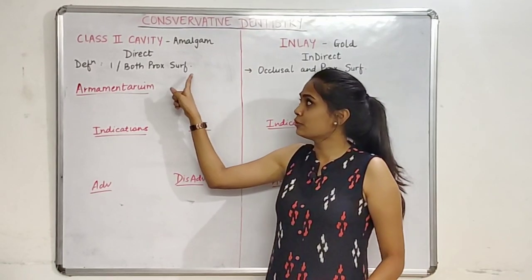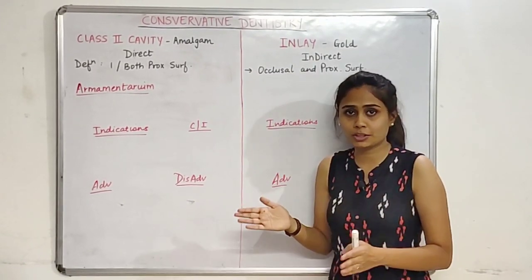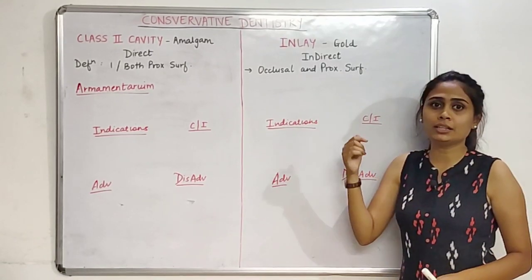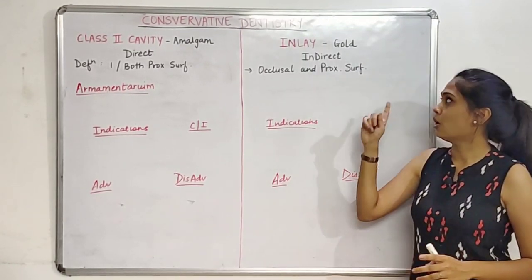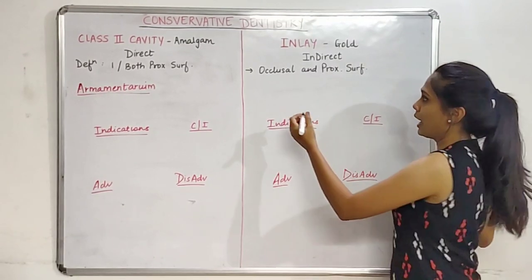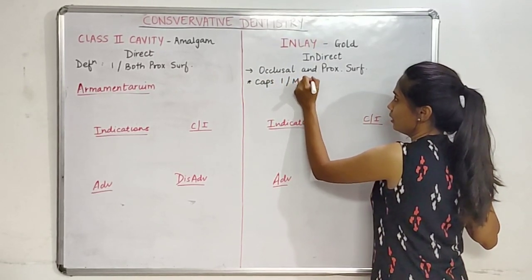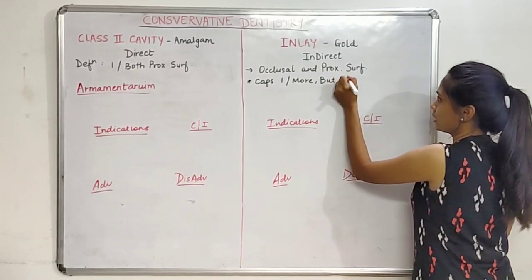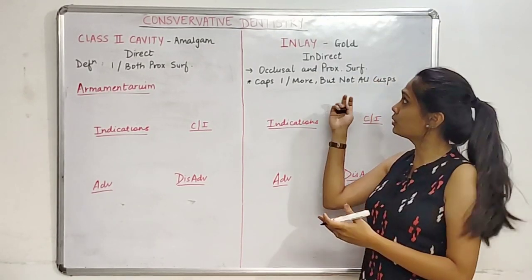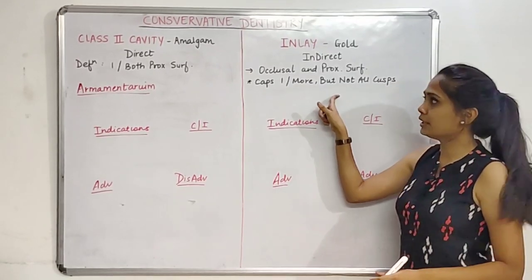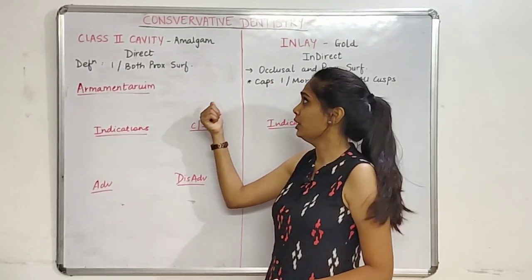As the casting is done outside the patient's mouth, we call it an indirect restoration. For the definition: the Class 2 cavity restores one or both of the proximal surfaces, whereas the inlay cavity restores the occlusal and proximal surfaces — it is an intracoronal cast metal restoration. We can also add that it caps one or more but not all cusps, because if it covered all cusps we would call it an onlay.